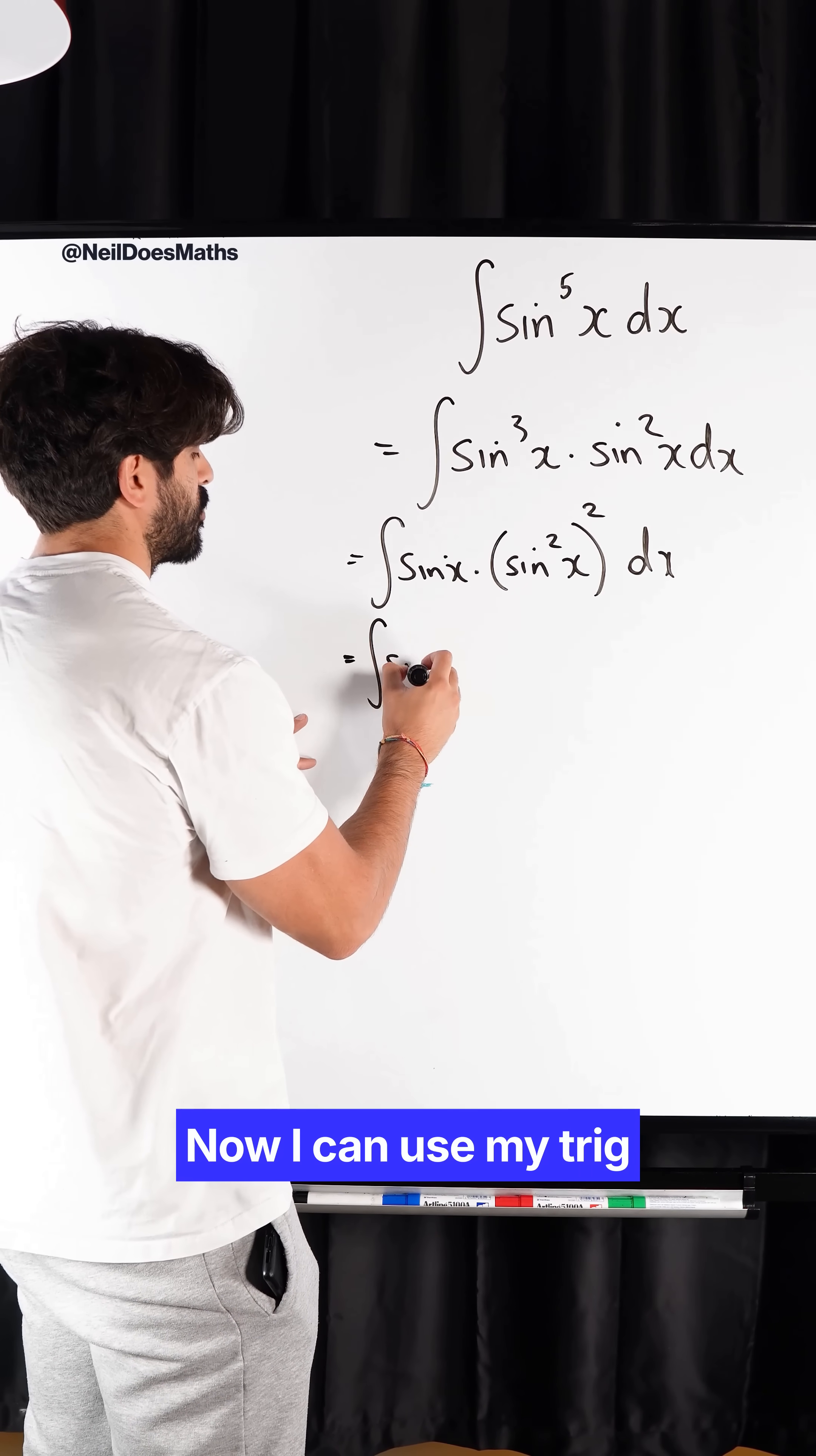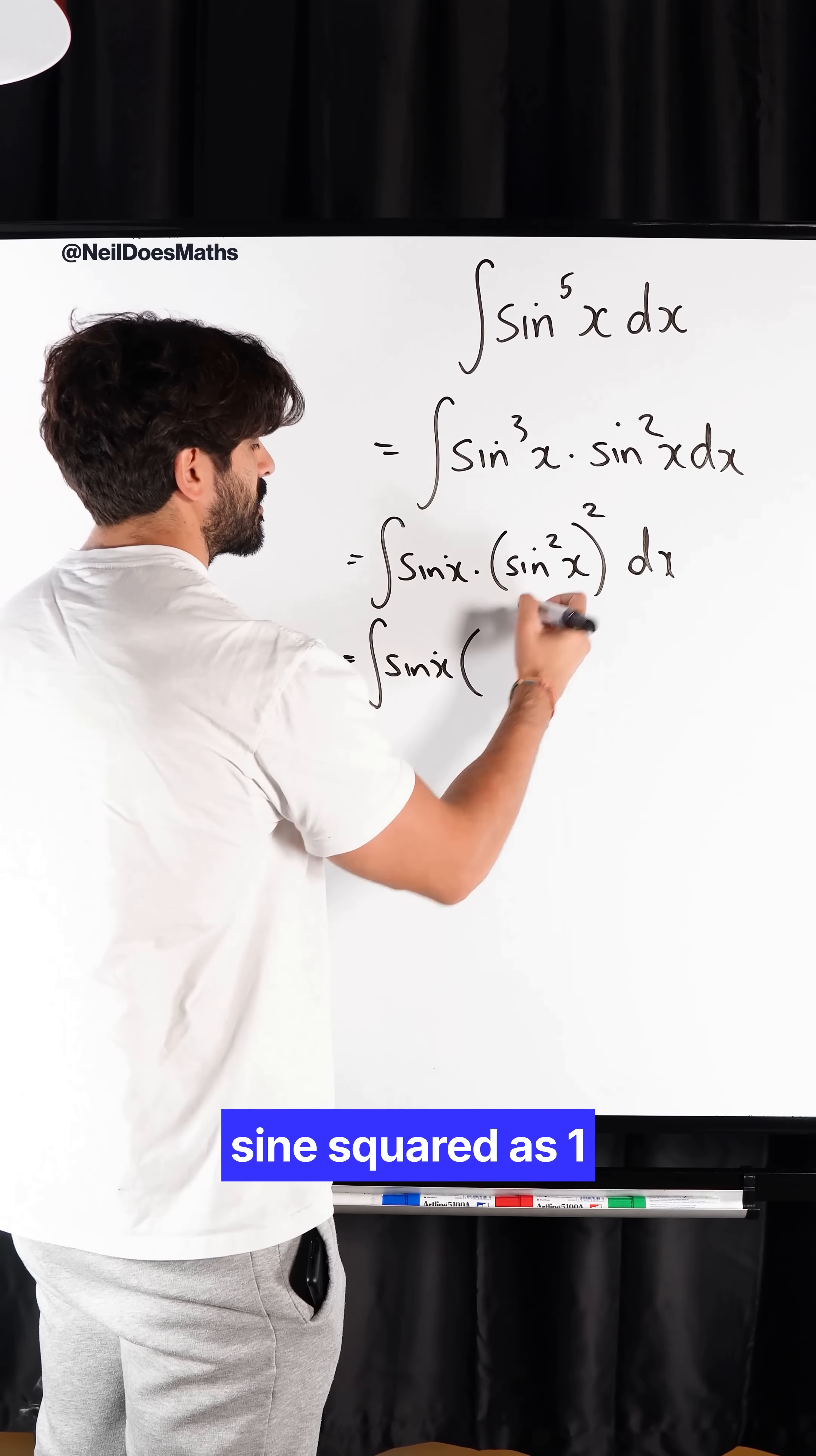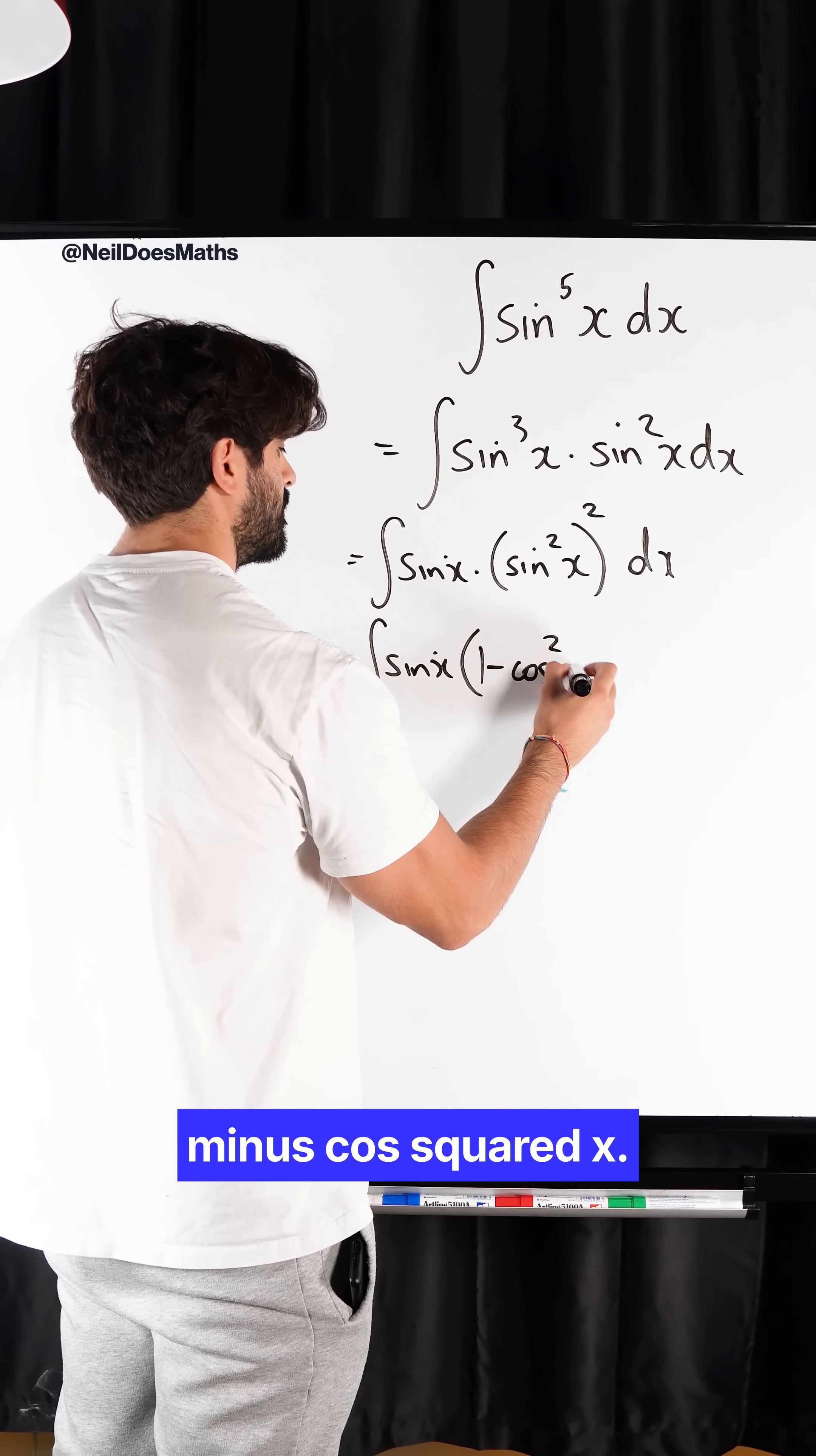Now I can use my trig identities and rewrite sin squared as 1 minus cos squared x.